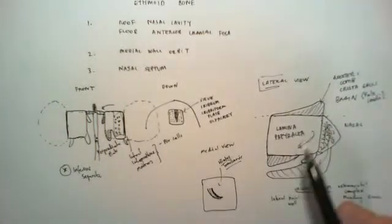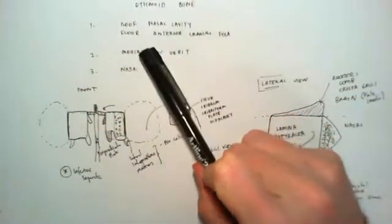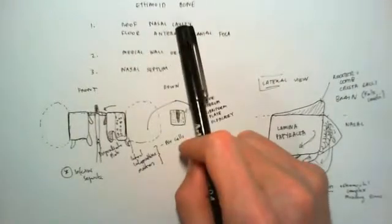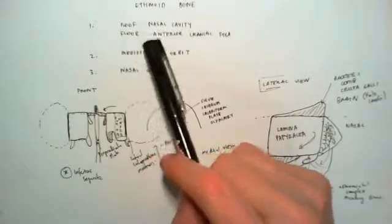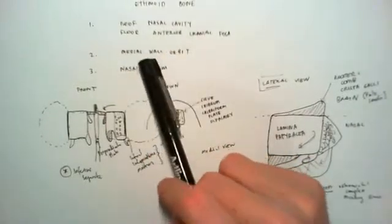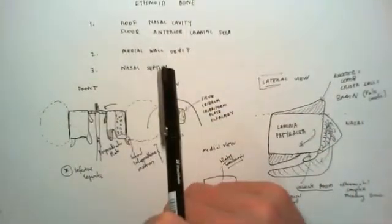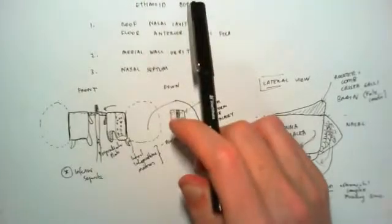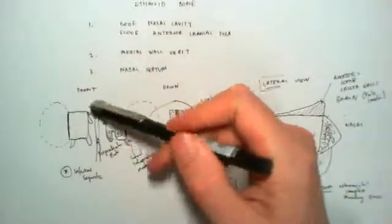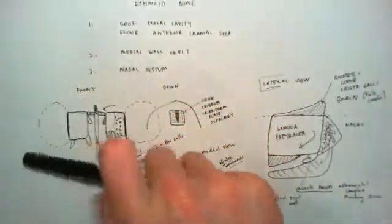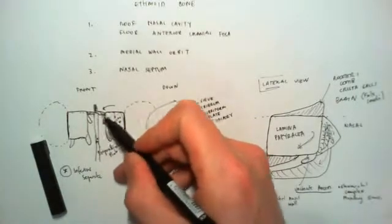So, basically, just to quickly recap, the ethmoid bone has three main functions. It forms a border between the roof of the nasal cavity and the floor of the cranium. It is also a border for the medial orbital wall. And it provides some of the support superiorly for the nasal septum. When you look at the ethmoid bone, conceptually, it's got two lateral masses that are joined by what looks like a cross.